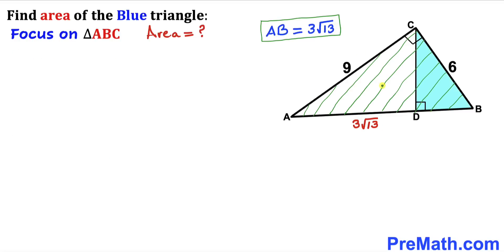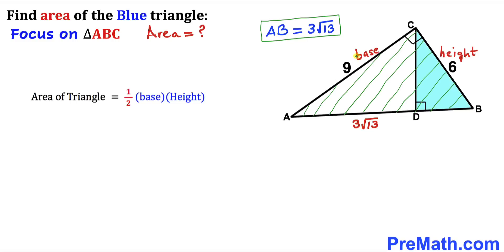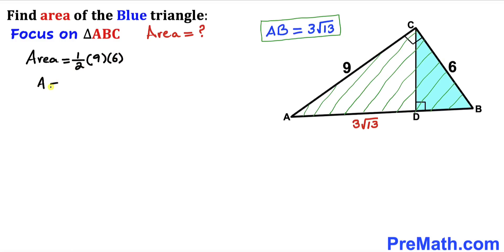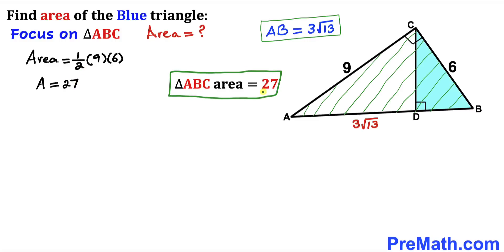Now let's go ahead and calculate the area of this triangle ABC. Recalling the area formula: area equals one-half times base times height. In our case the base is 9 and the height is 6, so the area of triangle ABC is one-half times 9 times 6, which simplifies to 27 square units.